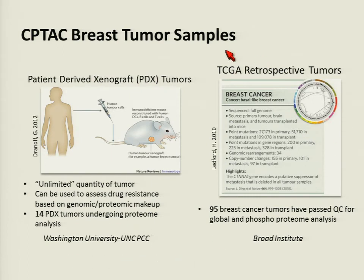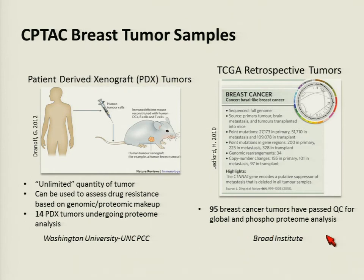We are additionally working with TCGA retrospective tumors. The TCGA has been doing genome sequencing of tumors for many years, with a large collection from many different tumor types. They have over 900 breast tumors, and we are looking at 95 of these for our global and phosphoproteome analysis, which is being done in Steve Carr's lab at the Broad.